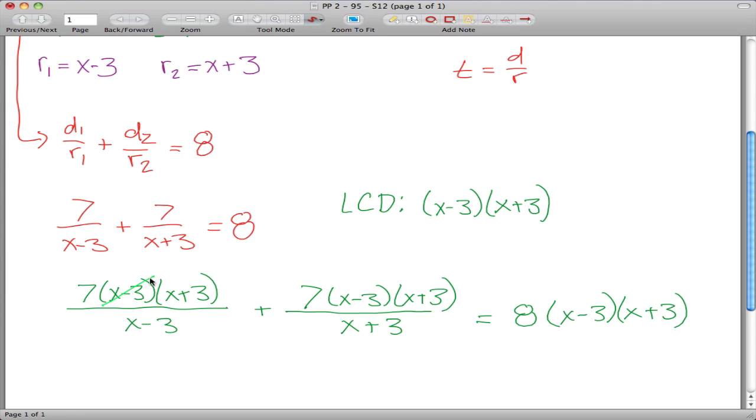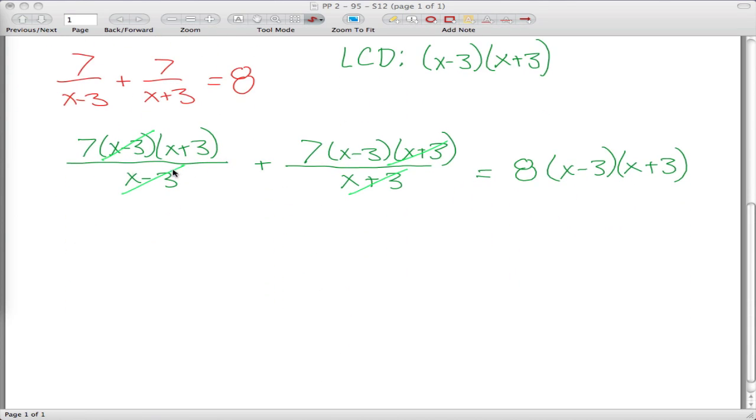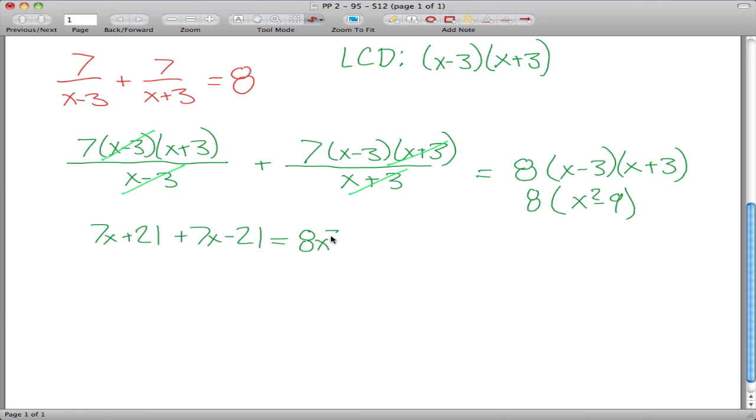What's kind of nice now is this X minus three and this X minus three cancel, this X plus three and this X plus three cancel, and we have a significantly simpler expression to deal with. Seven times X plus three is seven X plus 21, seven times X minus three is seven X minus 21, and X minus three times X plus three here is X squared minus nine, so really what we have to the right of this equal sign is eight times X squared minus nine, which is eight X squared minus 72.